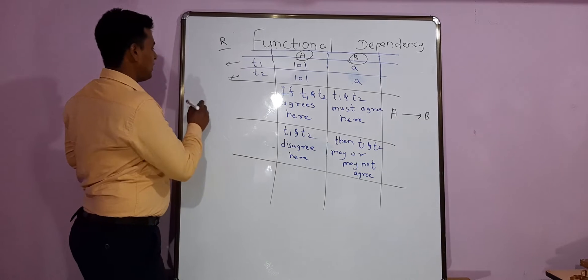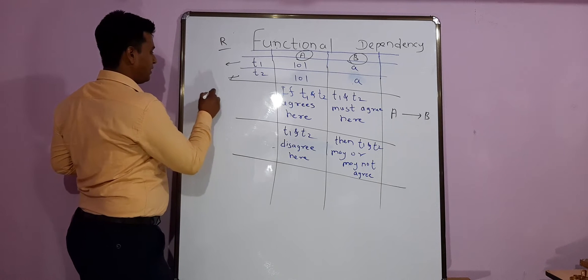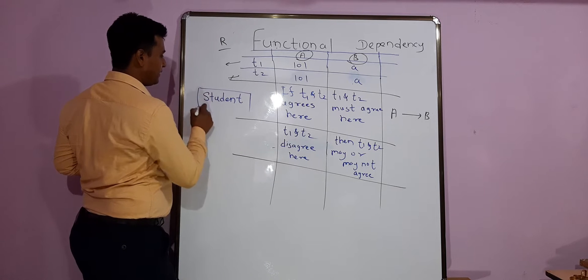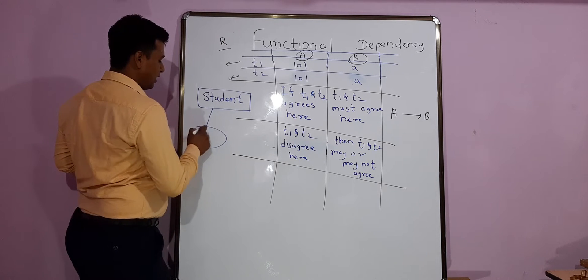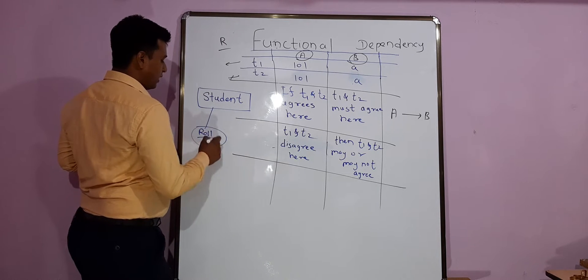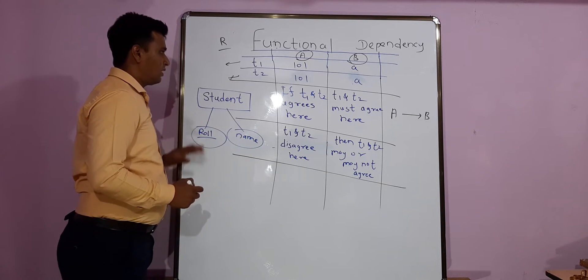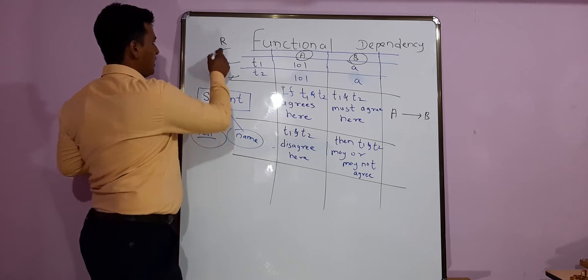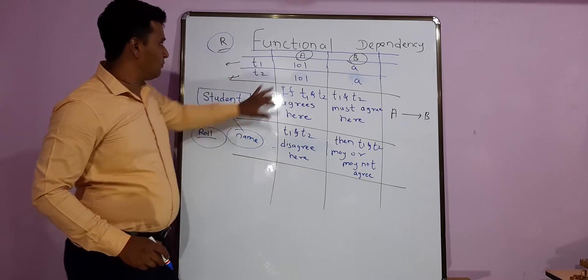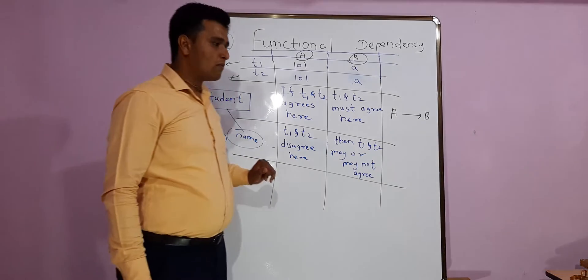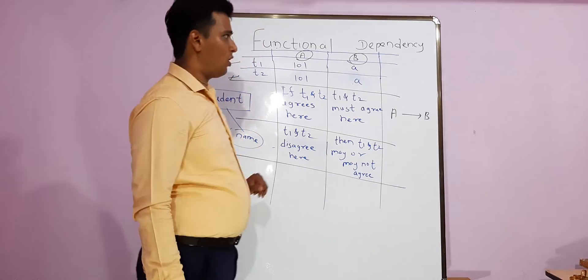Let's say the table name can be student. The relation is having student as one of the entity having different attributes. Let's say one of the attributes is role number, it is a primary key, noted. Let's say the name and different things like this. So this is one relation having name R and A and B are the two attributes of the relation. Now you are given this example in table format and you have to find out.